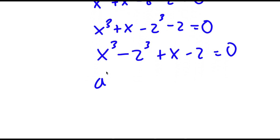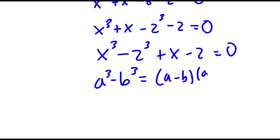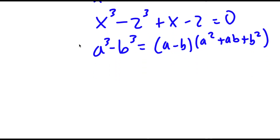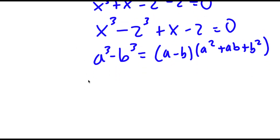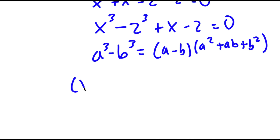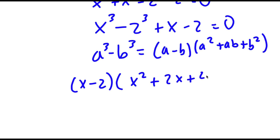If I have something in the form a to the power of 3 minus b to the power of 3, this is equal to a minus b times a squared plus ab plus b squared. So in this case, this changes to x minus 2 times x squared plus 2x plus 2 squared, which is 4, equal to 0.